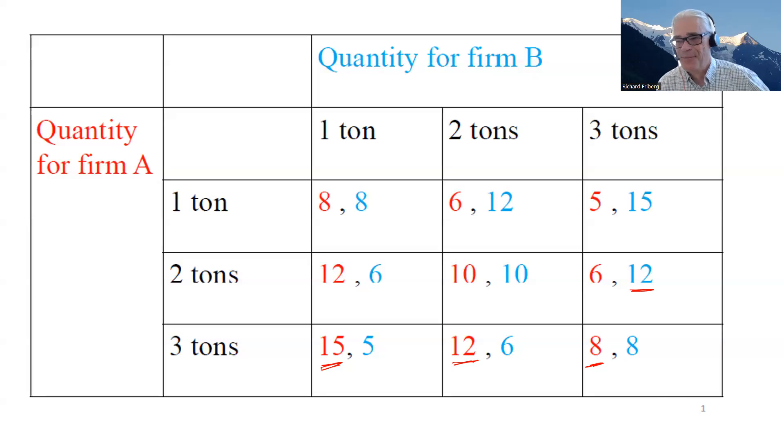Now walk over, put ourselves in the shoes of firm B, just walking through this payoff matrix. If A were to produce one ton, well, B would be comparing 8, 12, to 15. 15 is highest, so three tons would be the chosen strategy there.